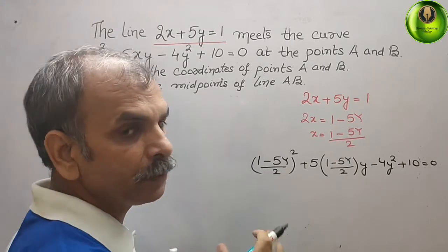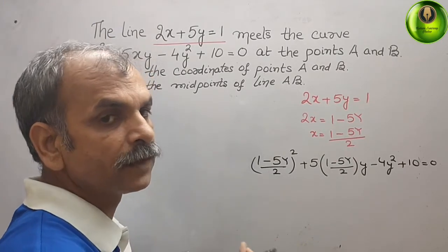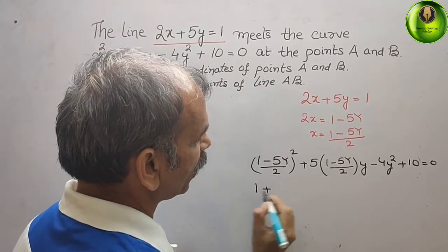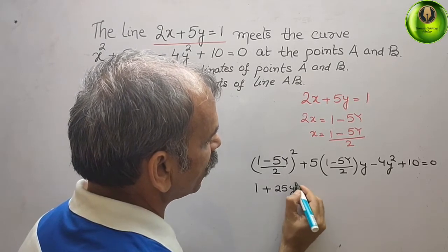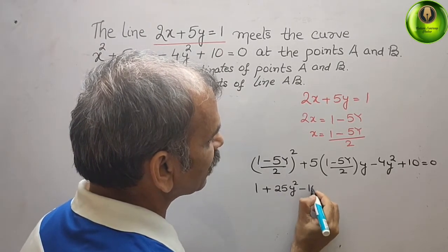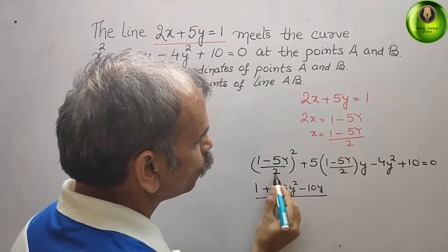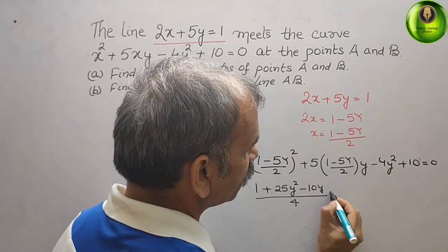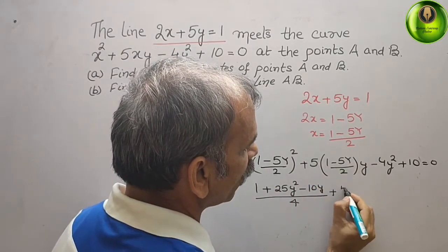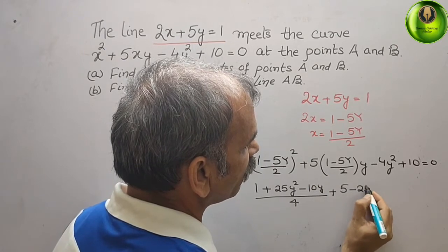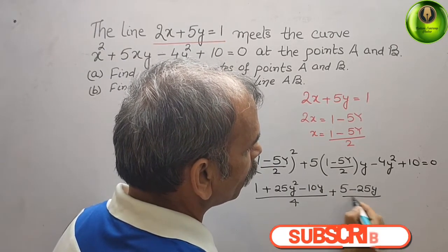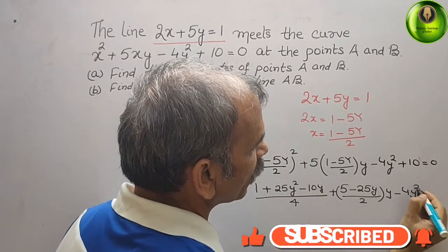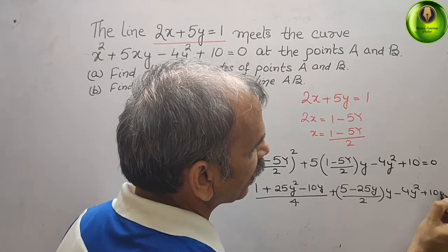Expanding (1 - 5y)² using the (a - b)² = a² + b² - 2ab formula, we get 1 + 25y² - 10y, divided by 4. Then we have plus 5y·(1 - 5y)/2·y, minus 4y² plus 10, all equal to 0.